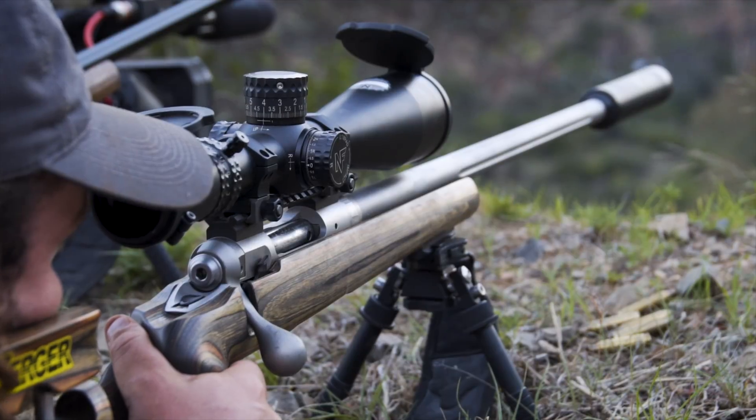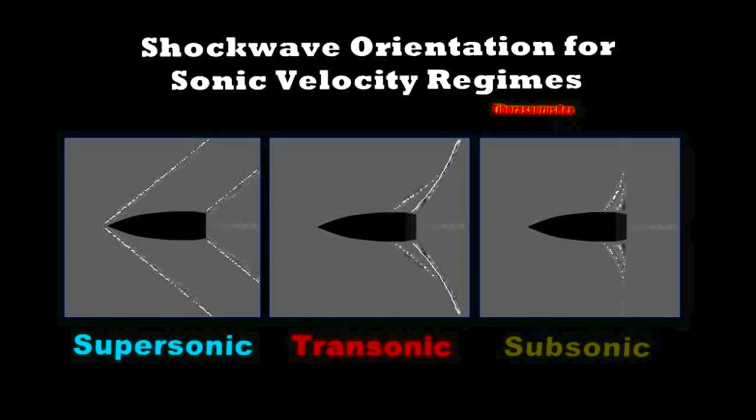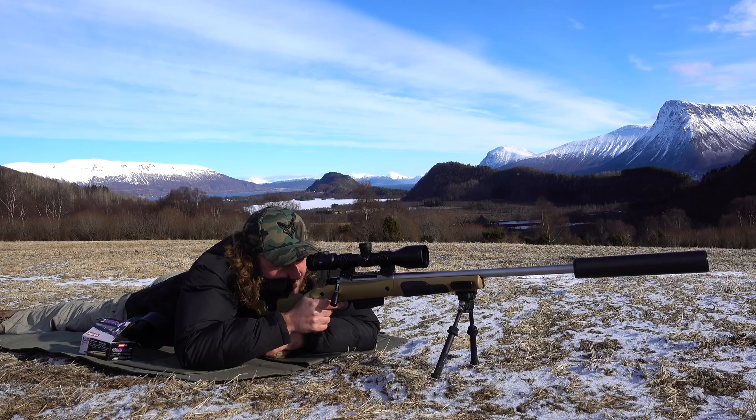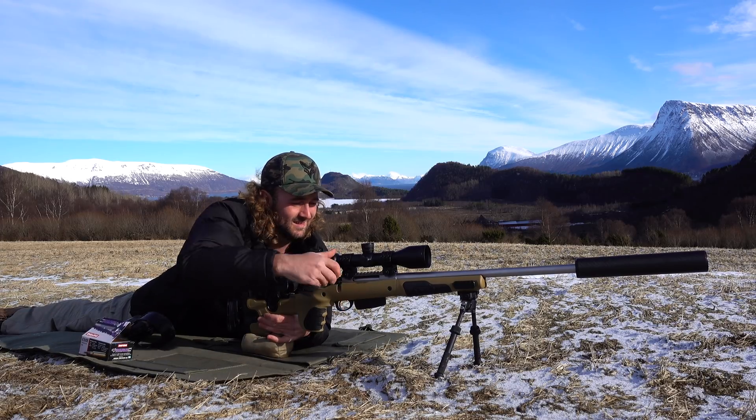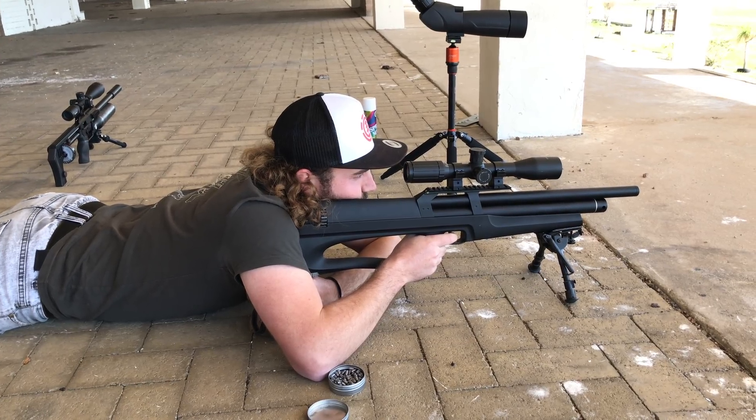Airflow velocity is obviously very important, and we can divide it into three sections: subsonic, where all airflow around a projectile is slower than the speed of sound; supersonic, where all airflow is faster than the speed of sound; and transonic, where airflow is part subsonic and part supersonic. If Mach 1 is the speed of sound, the transonic region is roughly defined as between Mach 0.8 — around 900 feet per second — and Mach 1.2 — around 1,350 feet per second. The lower end is sometimes called the critical Mach number, or MCRIT, because that's when some airflow around the projectile starts to go supersonic.